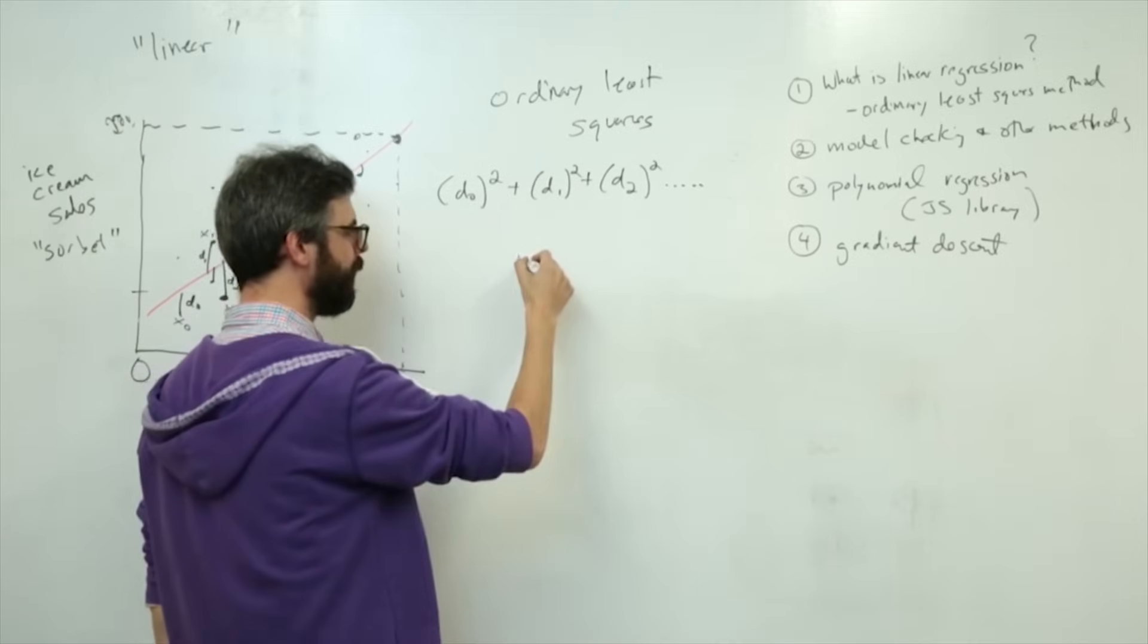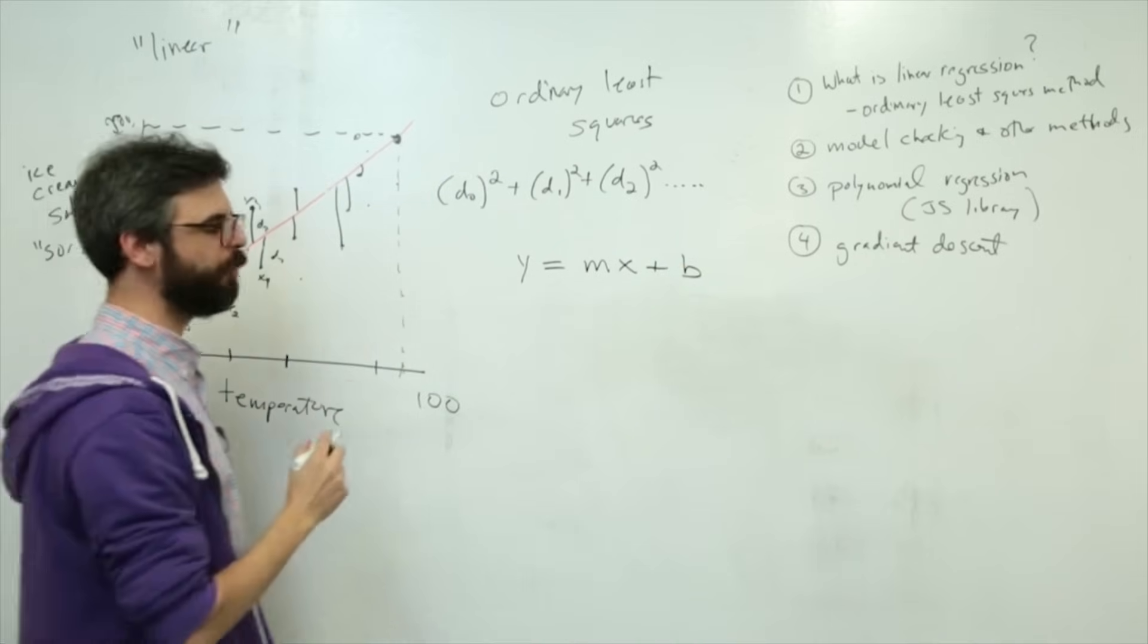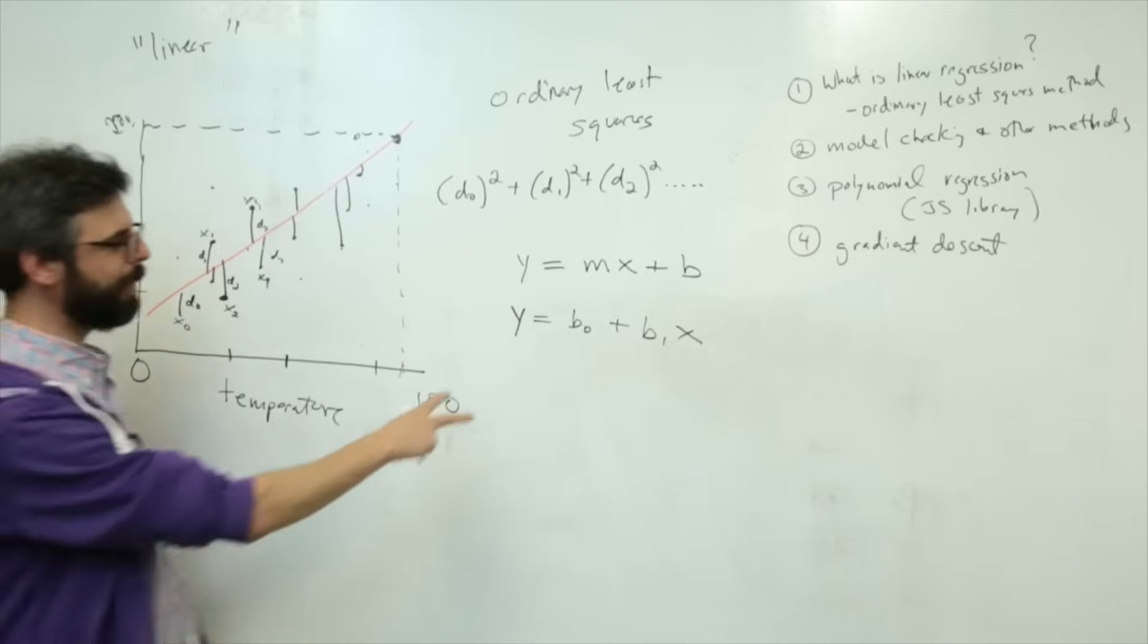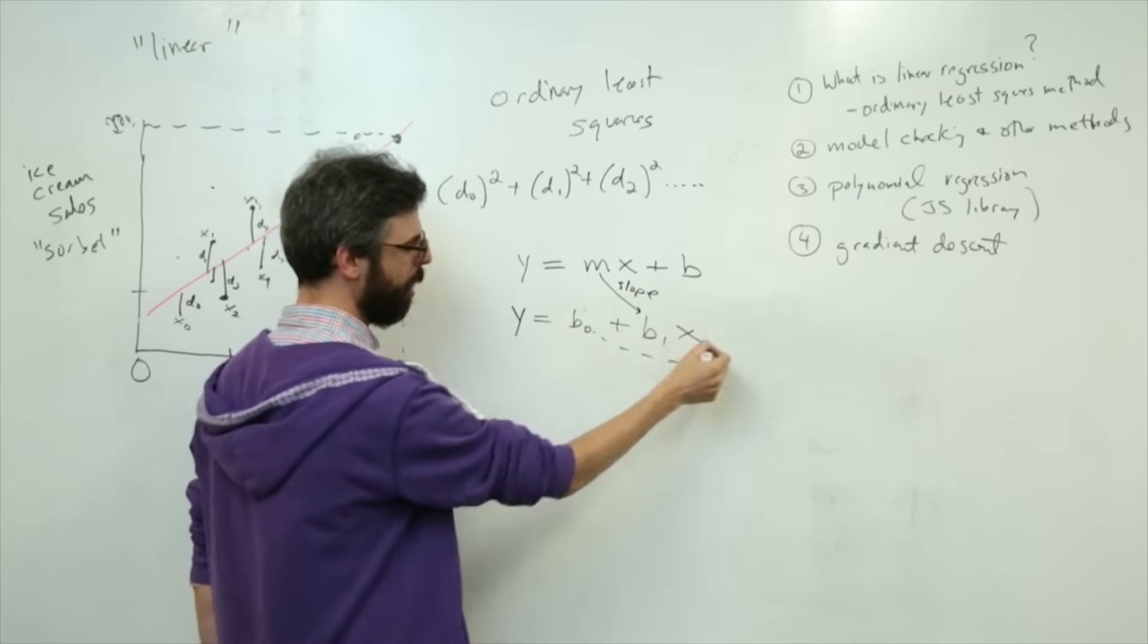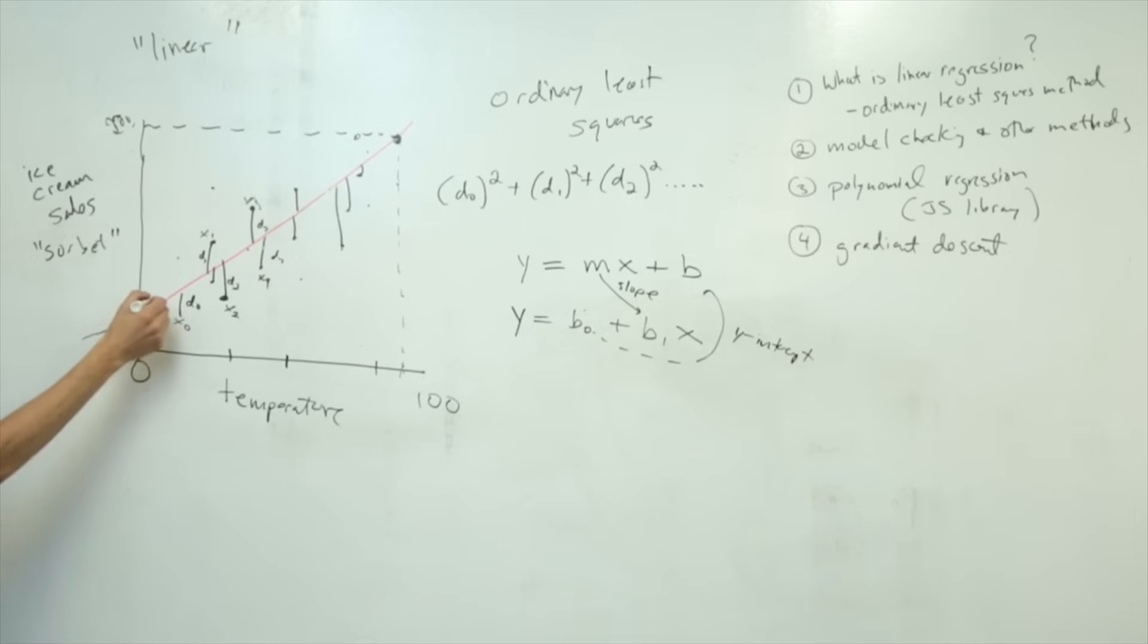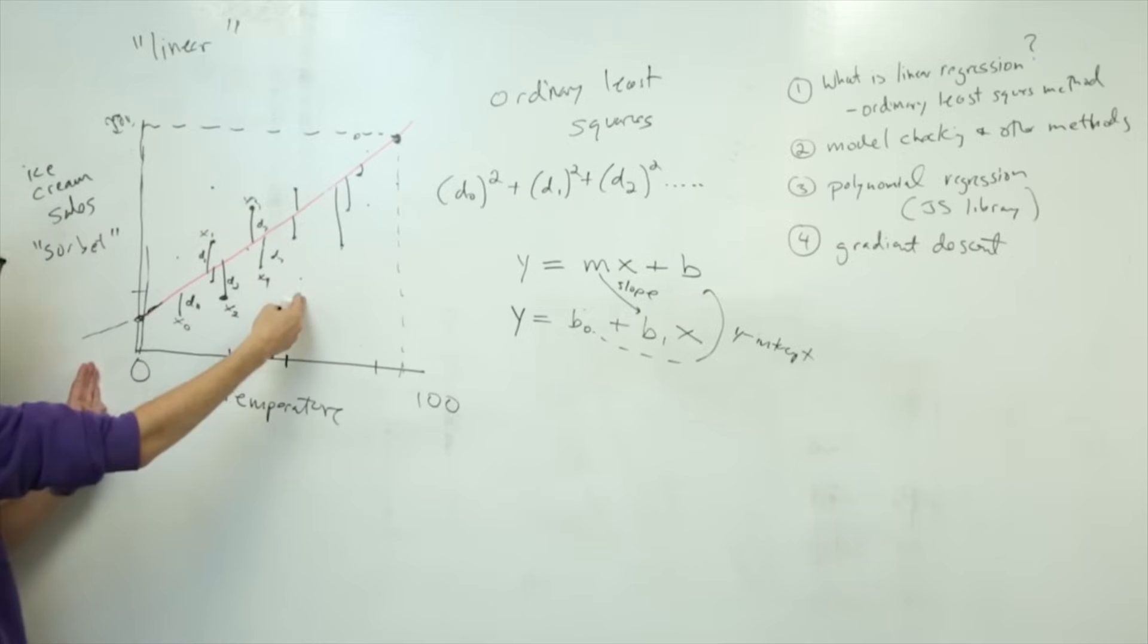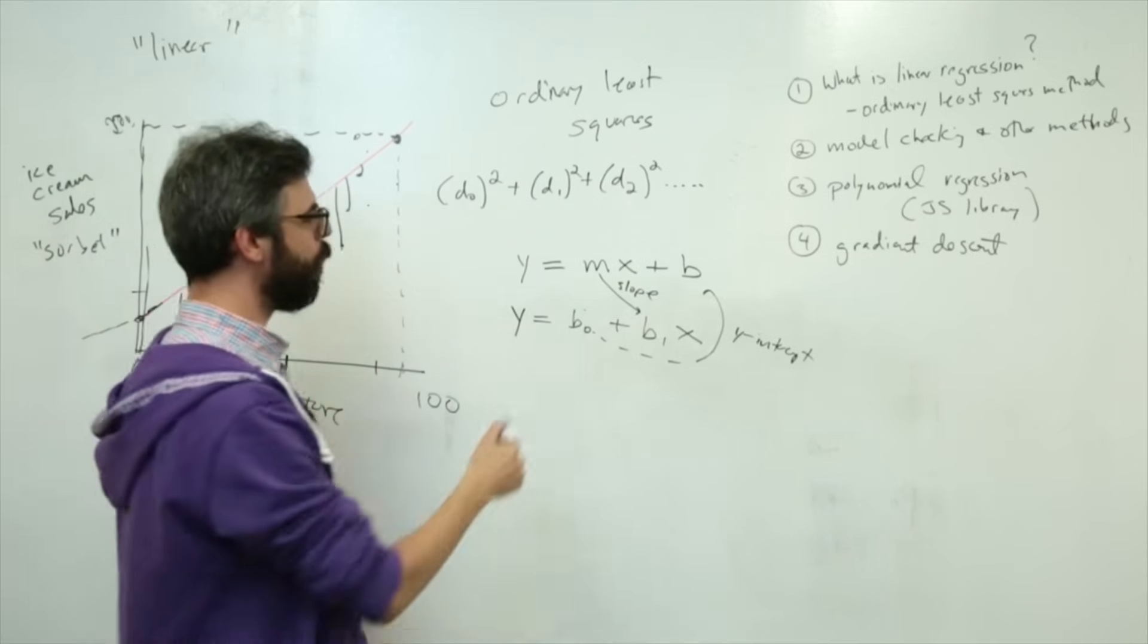So first of all, how do we represent mathematically this pinkish reddish line? The formula for a line is typically written as y equals mx plus b. I will point out, however, that if you look in the statistics textbook, you might see something like y equals b0 plus b1 times x. This is the same exact formula. M refers to b1 here as the slope. And b0 or b here is the y-intercept, which is the value where the line intersects the y-axis. So the slope, this m value, determines which way does the line point. And then the y-intercept is how high or low, where is that line relative to the x-axis.